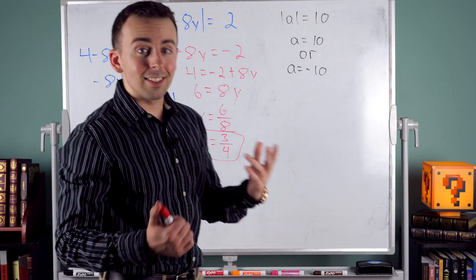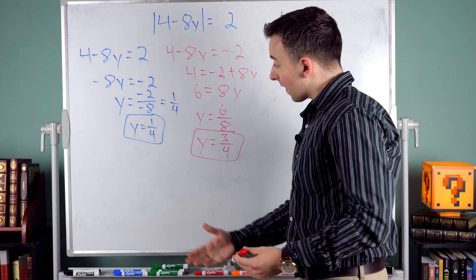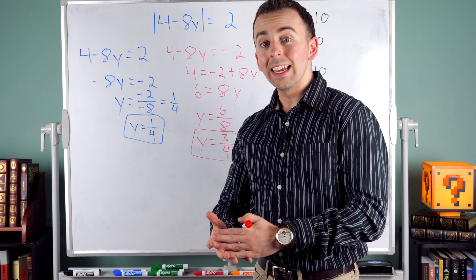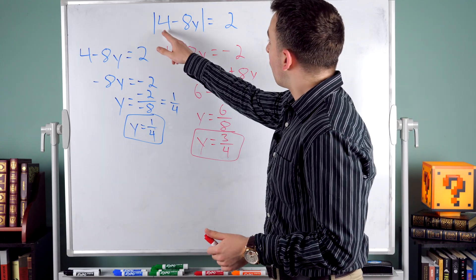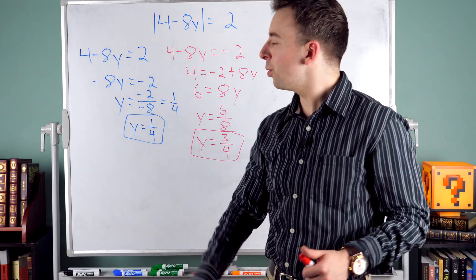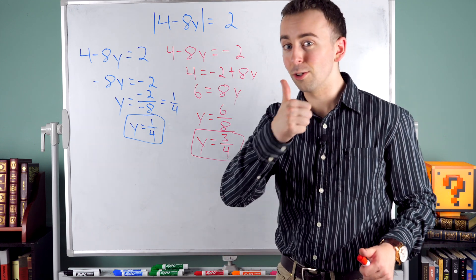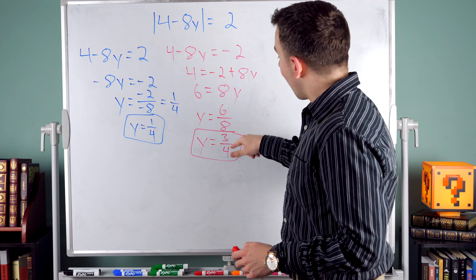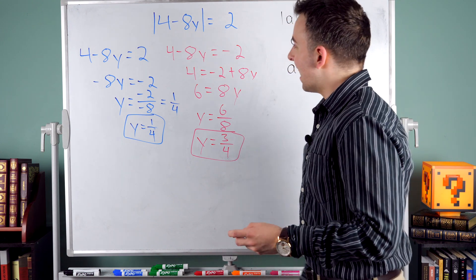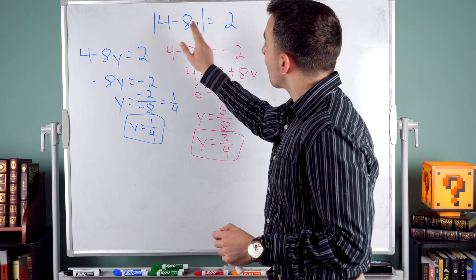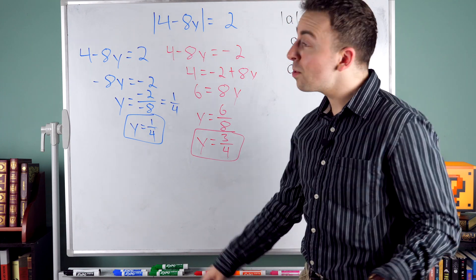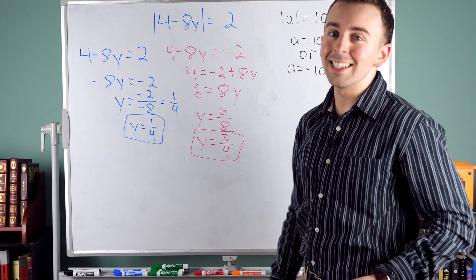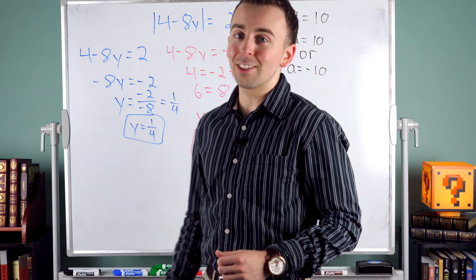Try plugging them in to verify. Y equals 1 fourth: 8 times 1 fourth is 2, and 4 minus 2 is 2, and the absolute value of 2 is 2 — good. Y equals 3 fourths: 8 times 3 fourths is 6, and 4 minus 6 is negative 2, and the absolute value of negative 2 is 2. Always a good idea to check your answers — everything looks good.